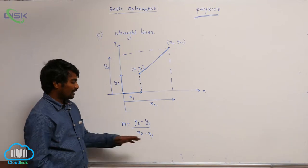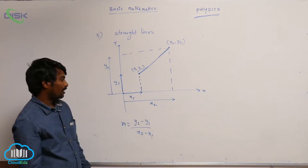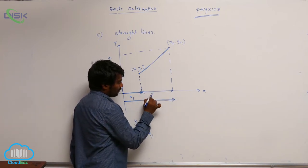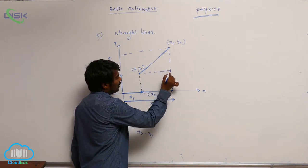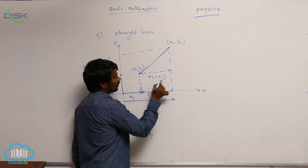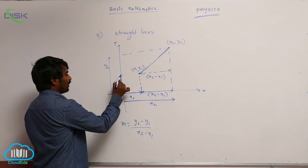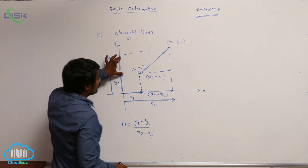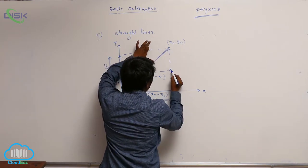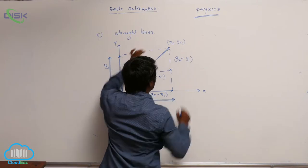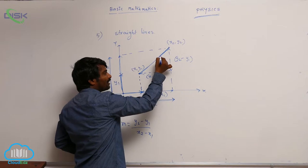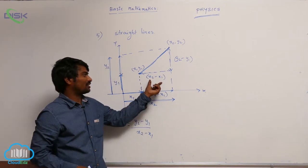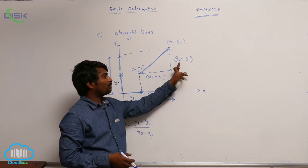How am I converting that previous discussion into the present discussion? This value is x1, this value is x2, so this value will be x2 minus x1. That means this value is also equal to x2 minus x1. This is y1, this is y2, so from here to here it is y2 minus y1. So this value is also equal to y2 minus y1. By taking this straight line as the hypotenuse of a right angle triangle, I have identified the two sides: x2 minus x1 is one side and y2 minus y1 is the other side.